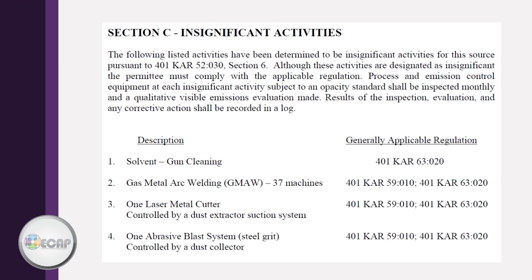Section C lists the insignificant activities. Insignificant does not mean they can be forgotten about. You may still have requirements to report on them in your EIS or list them on your semiannual and annual reports. As you can read in this text, the permittee must comply with the regulations and the opacity standards shall be inspected monthly and recorded in a log. In addition, those that have to keep 12-month rolling totals — such as this facility with VOCs and HAPs — will need to include the solvents used for gun cleaning listed in this insignificant activity.